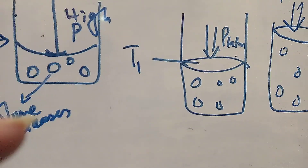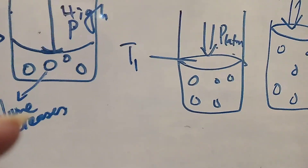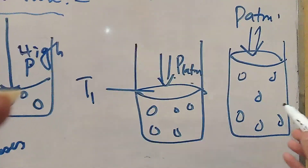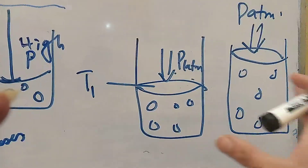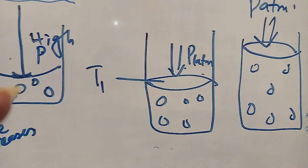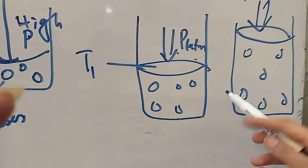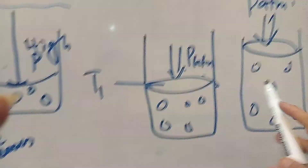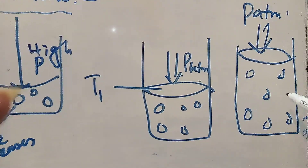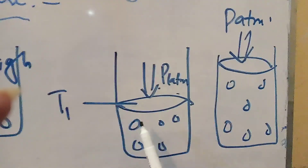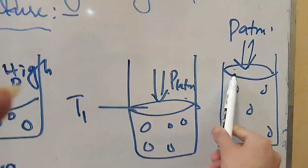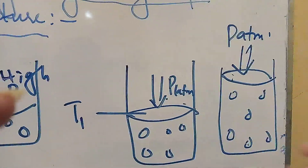If we increase the temperature, the particles will gain kinetic energy and their rate of movement will increase. Increasing the temperature raises the internal pressure. As a result, the volume of the gas increases in order to restore constant pressure.